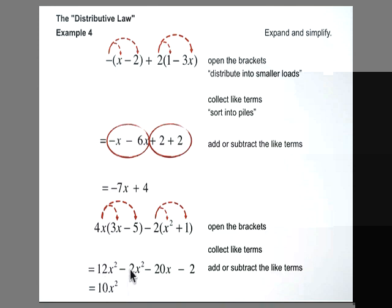12x squared take away 2x squared leaves me with 10x squared. Simply 12 take away 2x squared. Nothing to go along with the negative 20x, so it stays negative 20x. Nothing to go along with the negative 2, so again it stays a negative 2. So the answer to this simplification, meaning multiply using distributive law and then collecting like terms gives us 10x squared minus 20x minus 2.